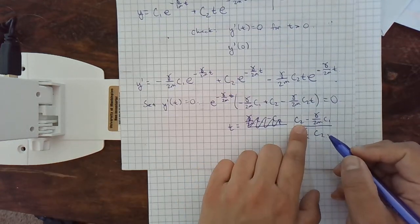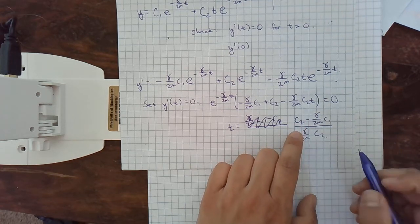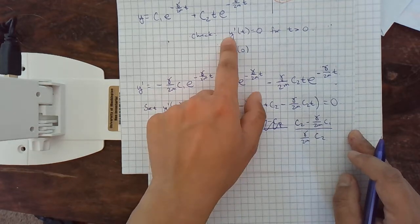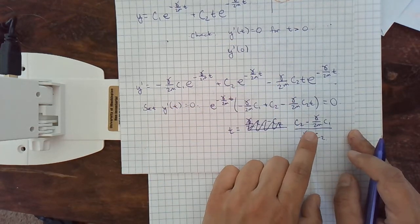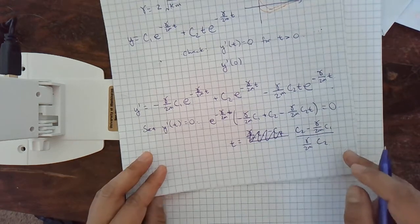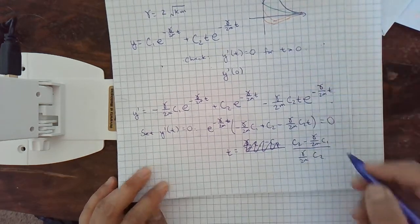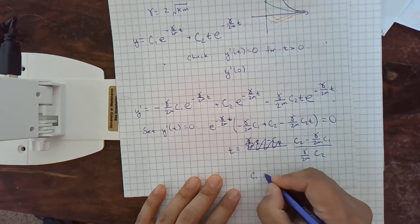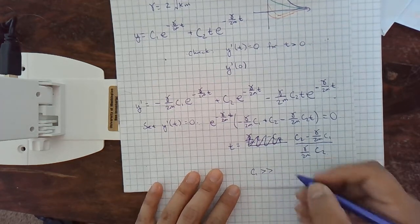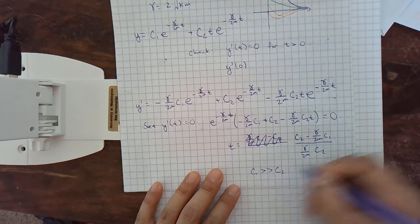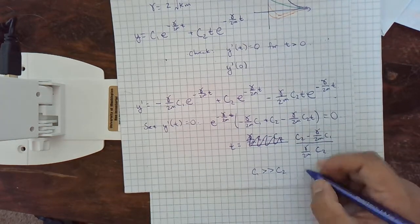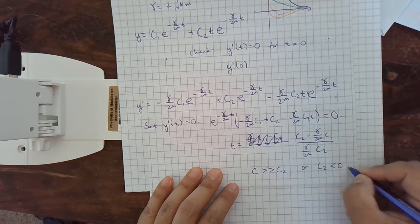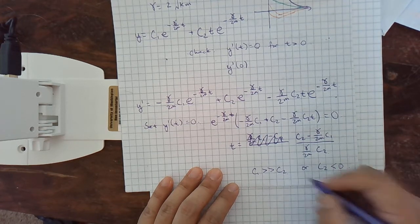So, when is y prime equal to 0? And especially what values of c1 and c2 make this negative? Well, either we have c1 is a lot bigger. This means a lot bigger than c2 because gamma over 2m is positive. Or c2 is negative.